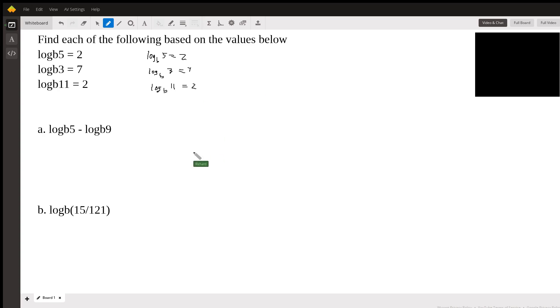So we're going to use properties of logs to get us through this. So log base B of 5, we already have that up here, you see? That's really nice. We'll just leave that alone. And we don't have a log base B of 9, but we do have a log base B of 3. So I'm going to write this as log base B of 3 squared, because 3 squared is 9.